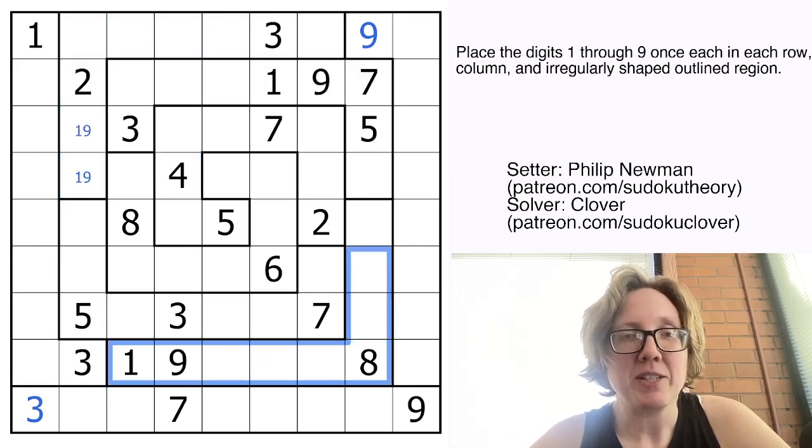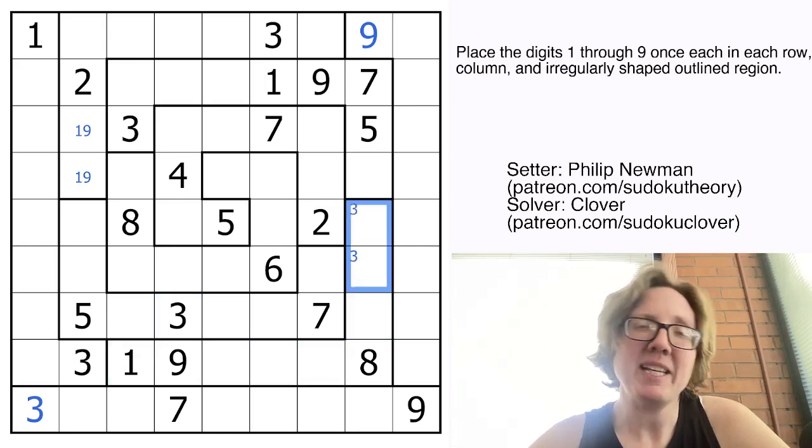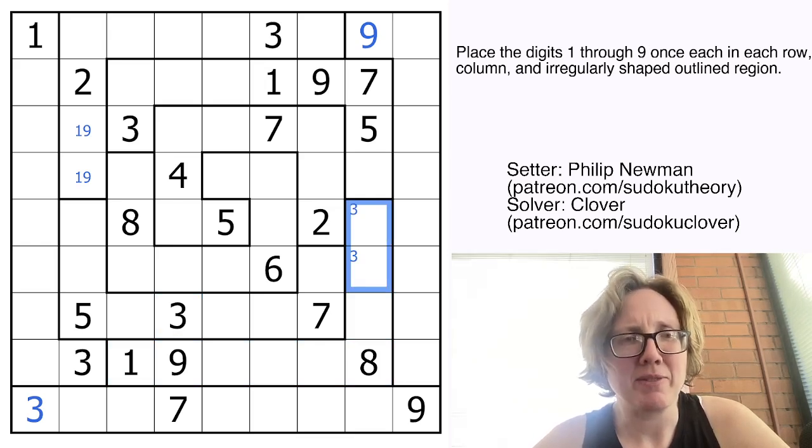Do I have a symmetrical deduction here? So I have a three in row eight. And so there's no three there. There's no three there because there's a three in this row already. And that just tells me that there's a three in one of those cells. Oh, but I do see something else with three.